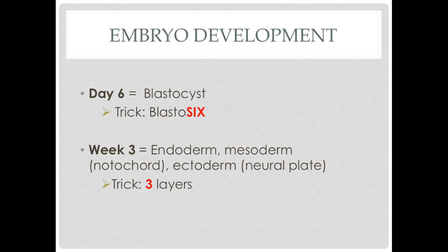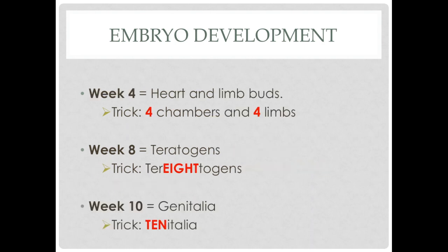Development of the embryo has many stages. Beginning at day 6, we have formation of the blastocyst — think of 'blasto-6.' On week 3, we have formation of the endoderm, mesoderm, and ectoderm — think of the three layers for week 3. On week 4, we have formation of the heart and limb buds. Note it's formation of the heart, not heartbeats, which happens on week 6. The trick is that the heart has 4 chambers and we have 4 limbs — so that's week 4.